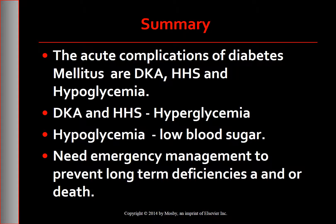In summary, the acute complications of diabetes mellitus are DKA, HHS, and hypoglycemia. DKA and HHS are effects of hyperglycemia, and hypoglycemia is the effect of low blood sugar. All three require emergency management to prevent long-term deficiencies and/or death.